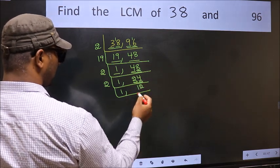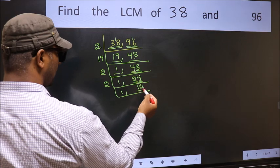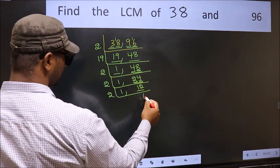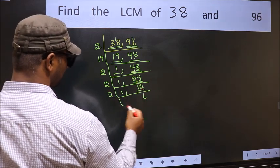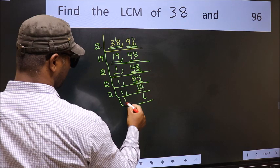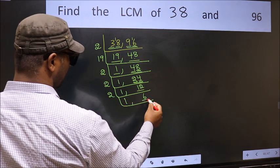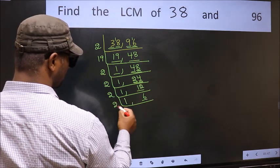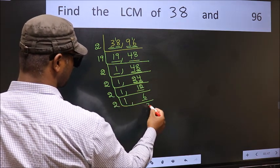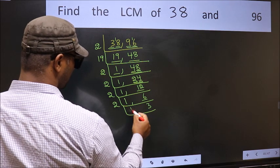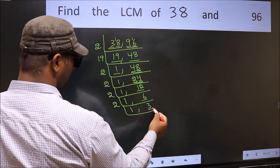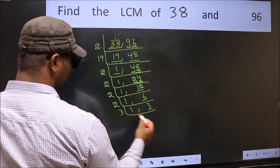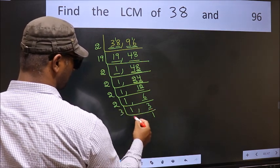Now here we have 12. 12 ÷ 2 = 6, since 2 sixes = 12. Now we have 6; 6 ÷ 2 = 3, since 2 threes = 6. Now we have 3; 3 is a prime number, so 3 ones = 3.